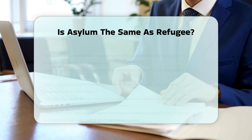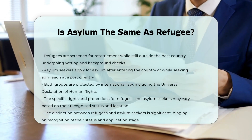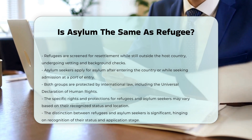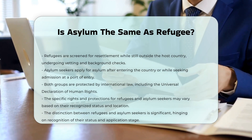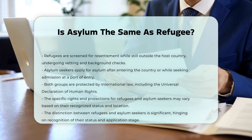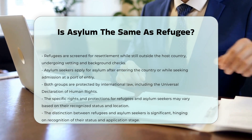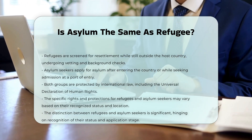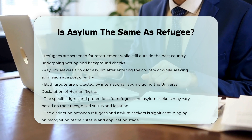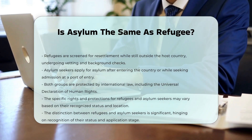Rights and protections. Both refugees and asylum seekers are protected by international law, including the Universal Declaration of Human Rights and the 1951 UN Refugee Convention. However, the specific rights and protections they receive can vary based on their recognized status and the country in which they are seeking protection.